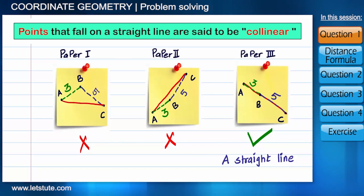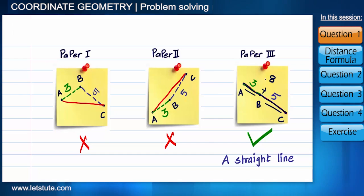At only one place we are getting a straight line, because at this point distance between A and C equals the addition of distances between A-B and B-C. At other places it would make a triangle. Since AB is three units and BC is five units, then AC must be eight units to be in a straight line.